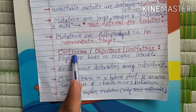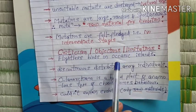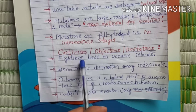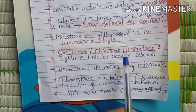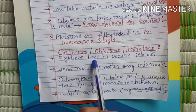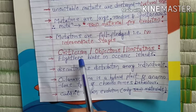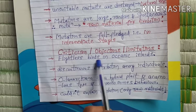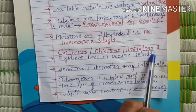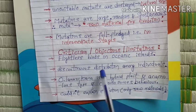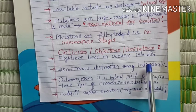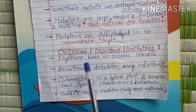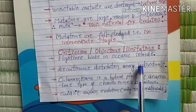Now we will briefly discuss the criticisms, objections, or limitations of Mutation Theory. First, this theory does not explain the presence of flightless birds on oceanic islands — for example, penguins and kiwis. Second, this theory is unable to explain the discontinuous distribution among individuals. There are two types of distribution — continuous and discontinuous — but this theory does not explain discontinuous distribution.